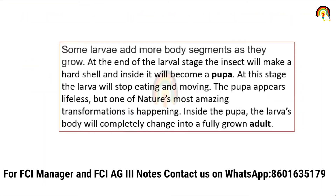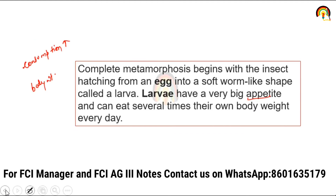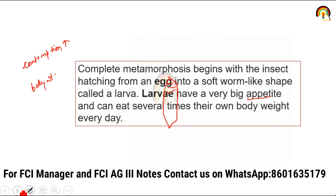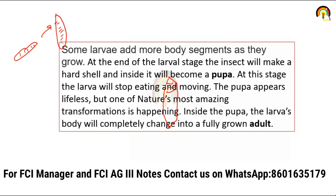Some larvae add more body segments as they grow — जैसे-जैसे larva grow होता जाता है, उनके body में जो segments हैं वो भी बढ़ते चले जाते हैं। At the end of the larval stage, the insect will make a hard shell and inside it, it will become a pupa.